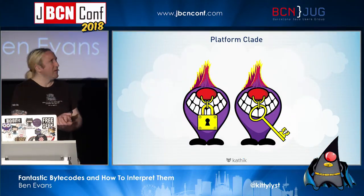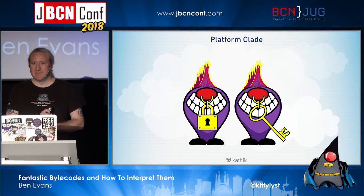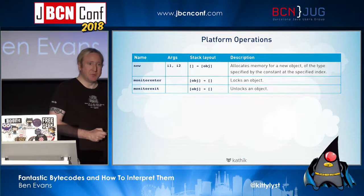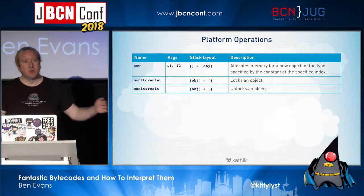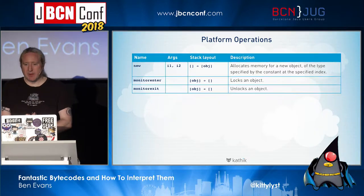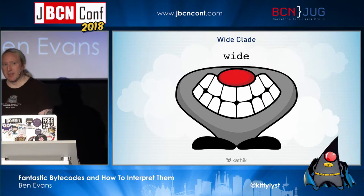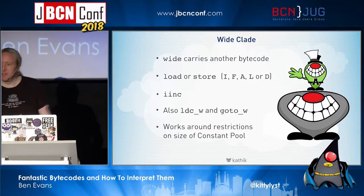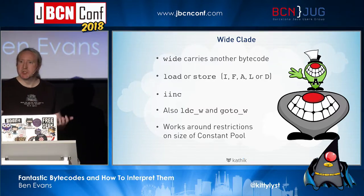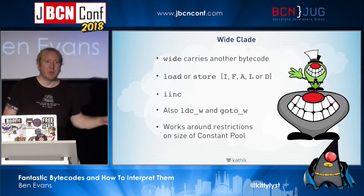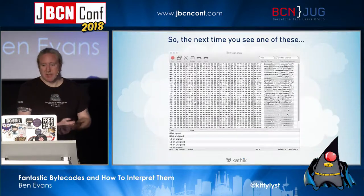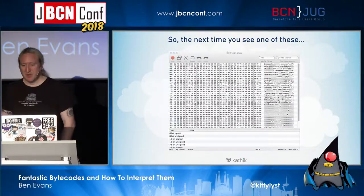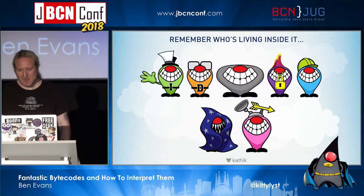monitorenter and monitorexit - these come from synchronized. You put an object on top of the stack and call monitorenter to lock it - that's the start of a synchronized block. monitorexit is called at the end when the lock is released. There's also a fifth clade called 'wide' which can carry another bytecode to work around restrictions in the constant pool, letting you access more data than the original design allowed - it can carry one of its friends on its back. The next time you see a class file, just remember who's living inside it.